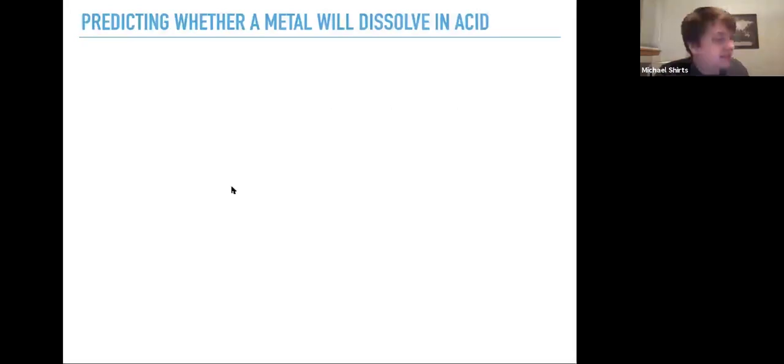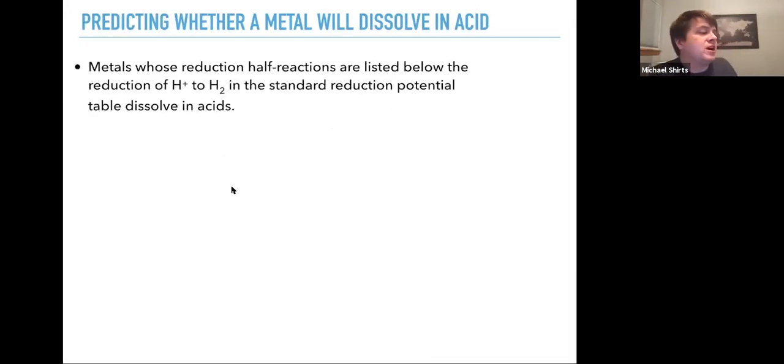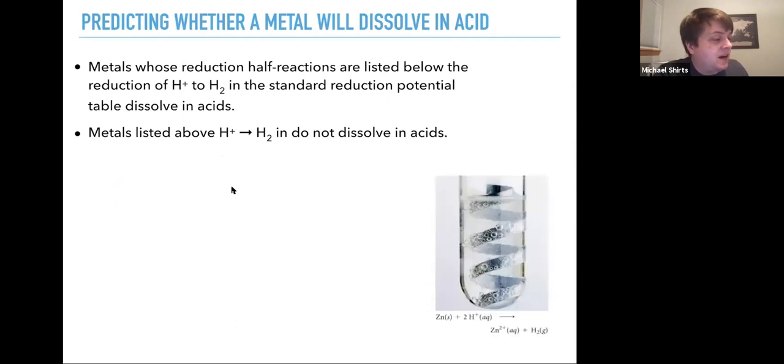Predicting whether a metal will dissolve in acid. This is a very common problem of interest. So metals whose reduction half reactions are listed below the reduction of H plus to H2 in the standard reduction potential table, those dissolve in acids. So metals that are listed above do not dissolve in acids. For example, if you put zinc in with an acidic solution, you will actually dissolve the zinc. You'll produce H2 gas. You'll see it bubbling off and you'll get zinc two plus ions going into solution.